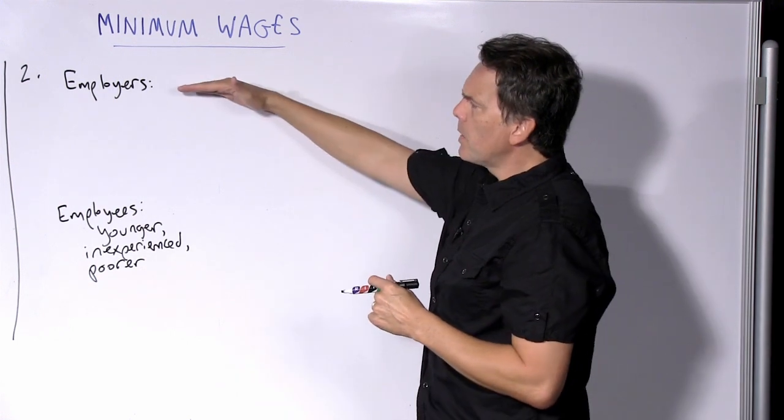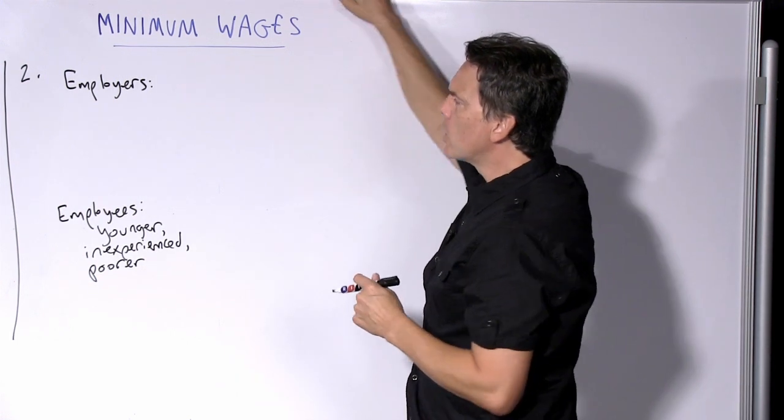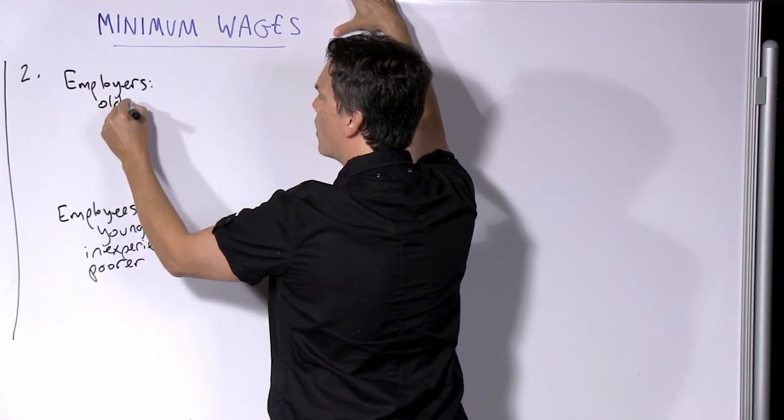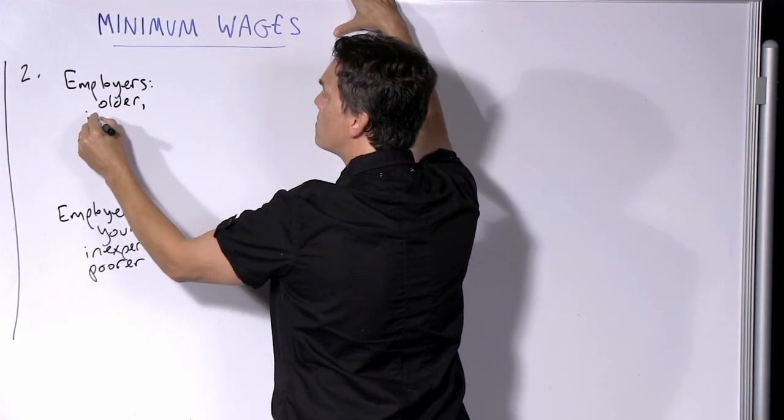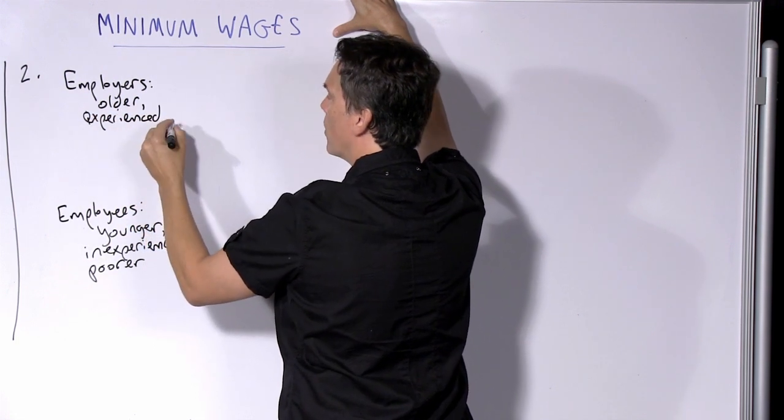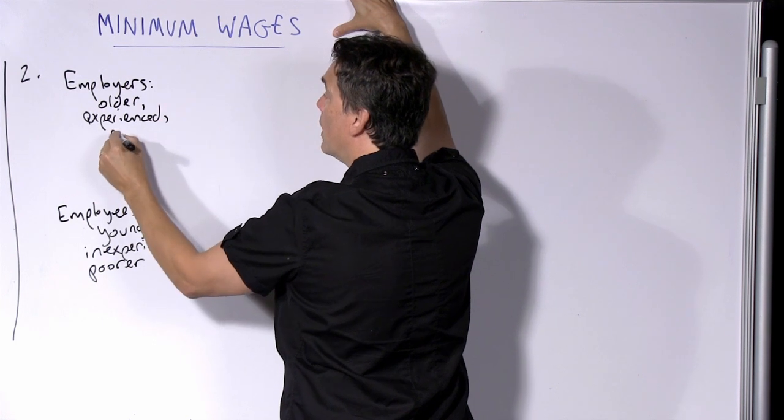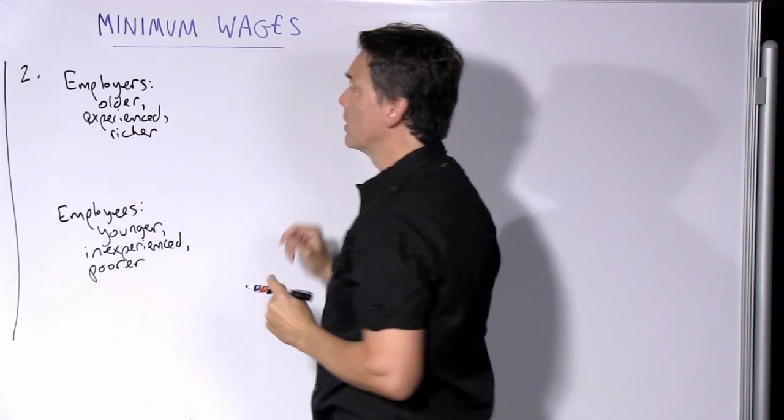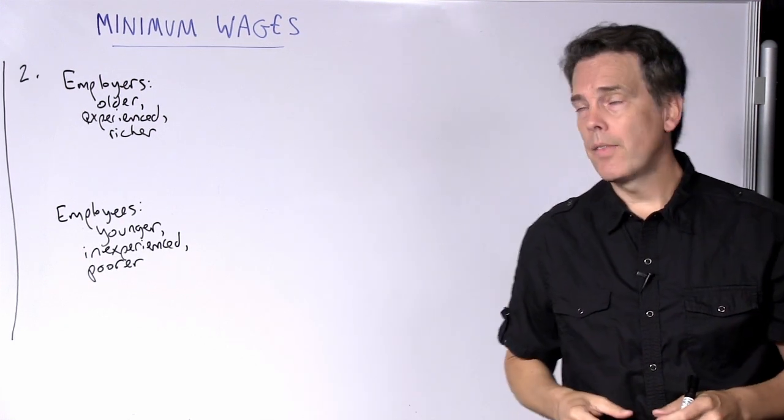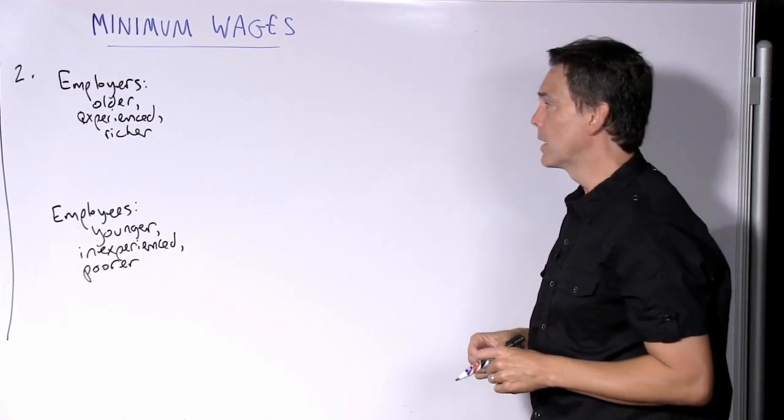By contrast, if we think about the employers with whom they are negotiating in the free market, what we have is people typically who are older, who are experienced with respect to business. They know their business, they know the market, they've been around for a while, and they typically are richer, almost by definition. If you're an employer, you've got a flourishing business, and that means that you are economically successful.